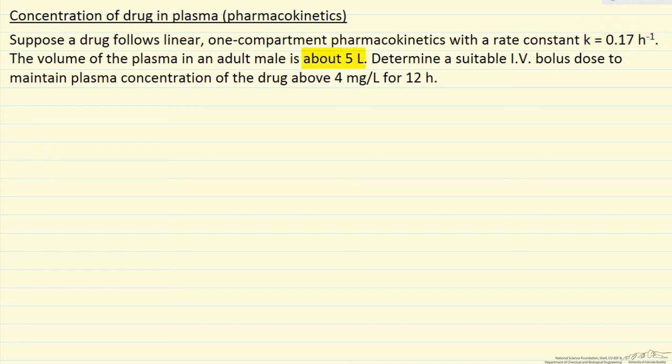We're given that the volume of the plasma in an adult is about 5 liters, and we want to determine what's a suitable dose to inject initially in order to maintain the concentration of the drug in the plasma above 4 mg per liter for 12 hours.